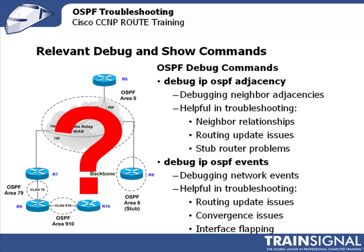Debug commands can also be particularly helpful in determining the cause of particular issues. The debug IP OSPF adjacency command can help you with debugging neighbor adjacency issues. It's helpful in troubleshooting neighbor relationships, routing update issues, LSA types, and stub router problems.